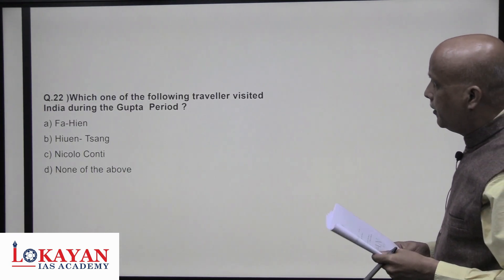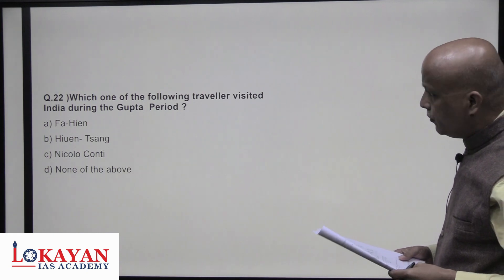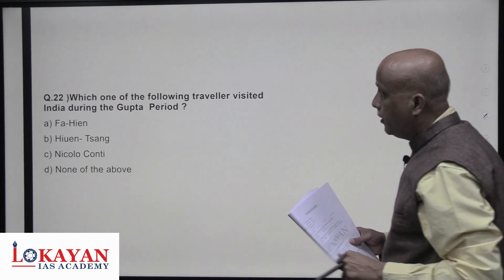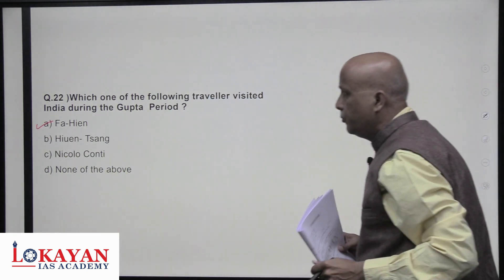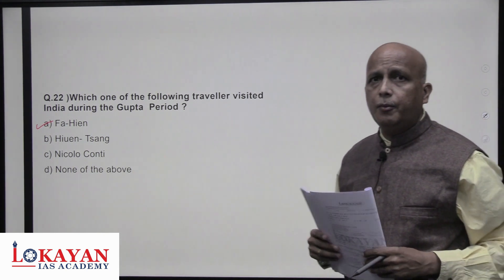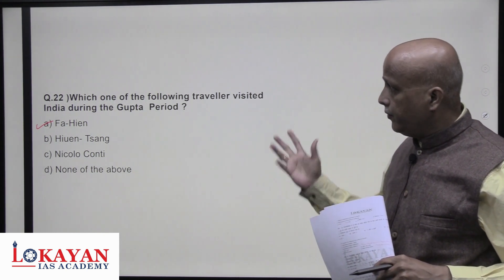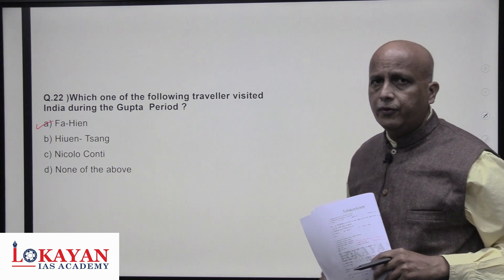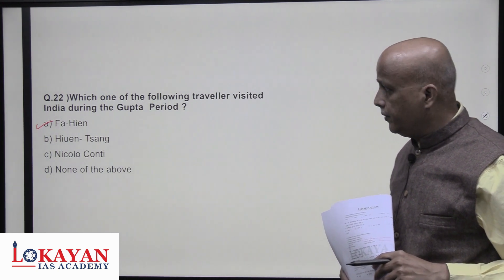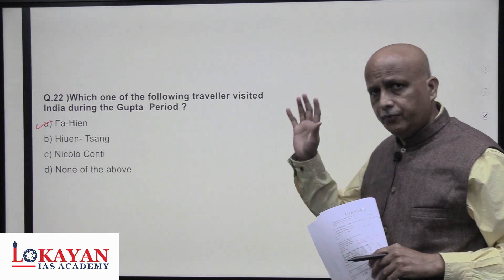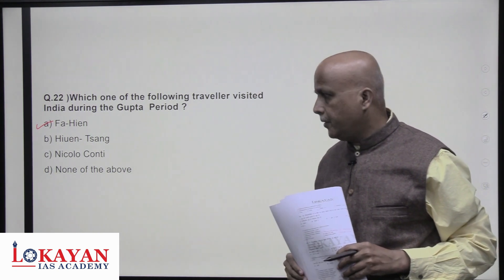Which of the following travellers visited India during the Gupta period? Fa-Hien is the very famous traveller who visited India in the Gupta period and wrote in detail about Gupta polity and society. Huien Tsang was a friend of Harsha and visited in the medieval period. Nicolai Conti visited during the Vijayanagara period — much later, in the medieval period.